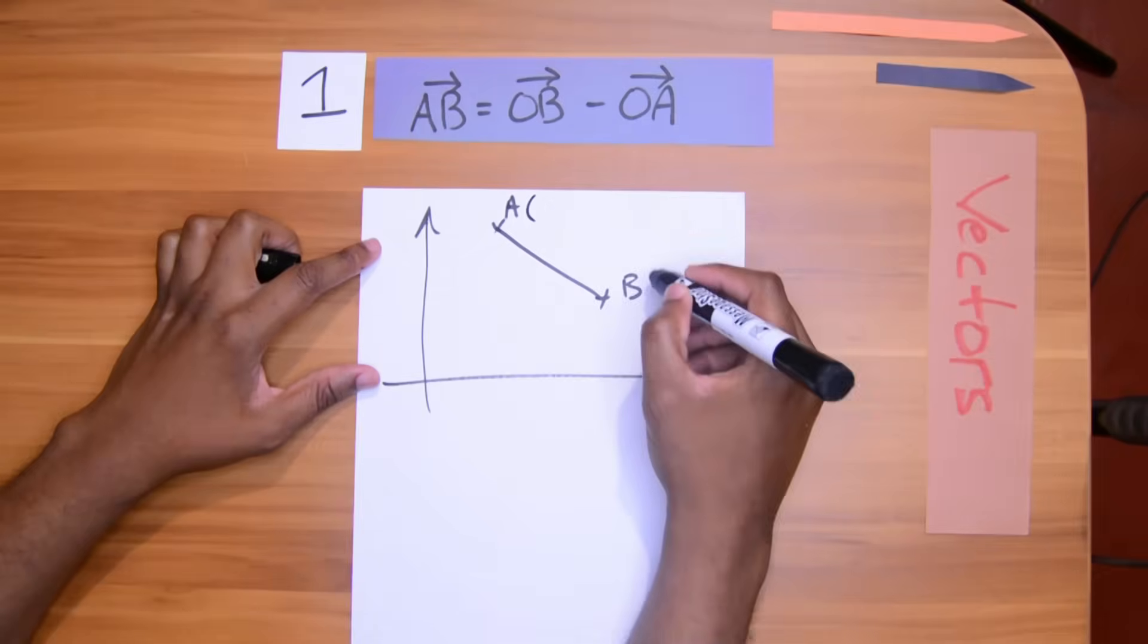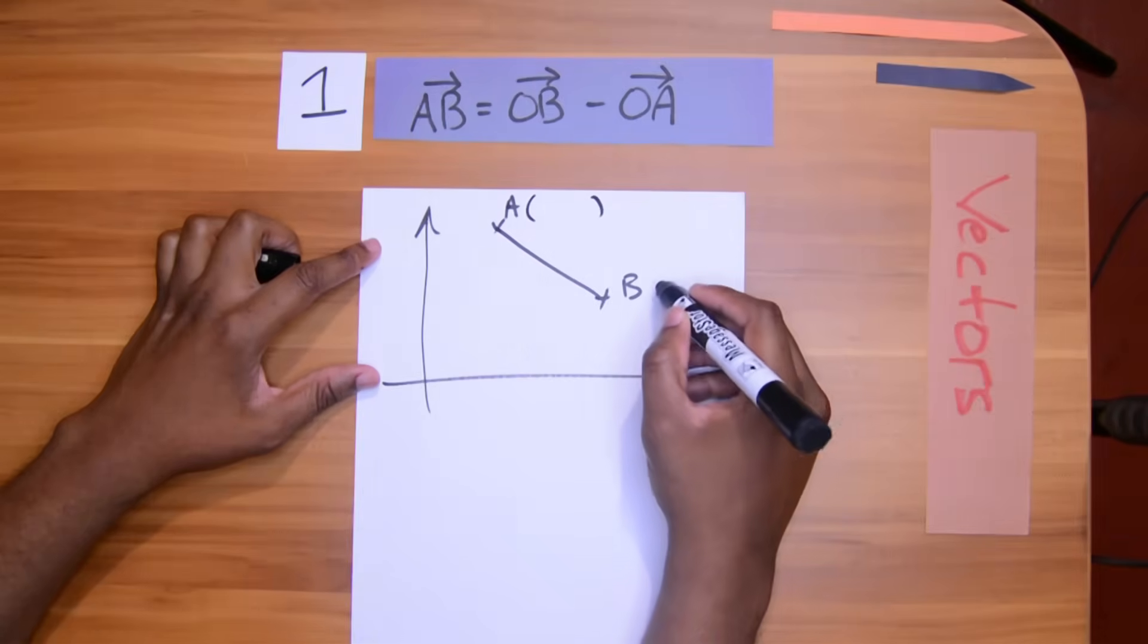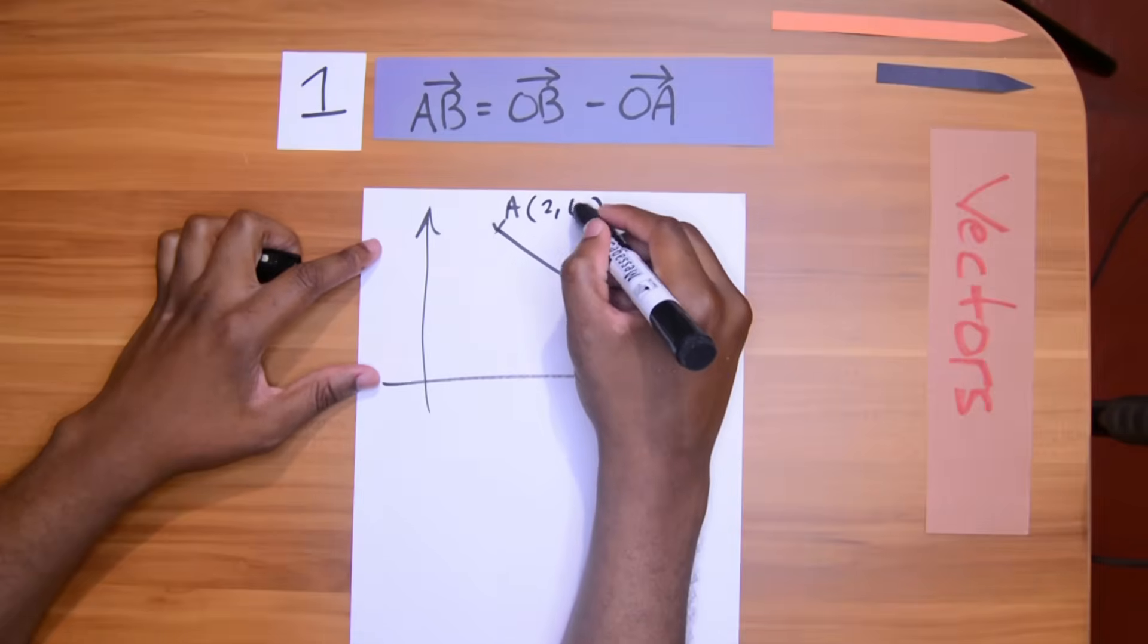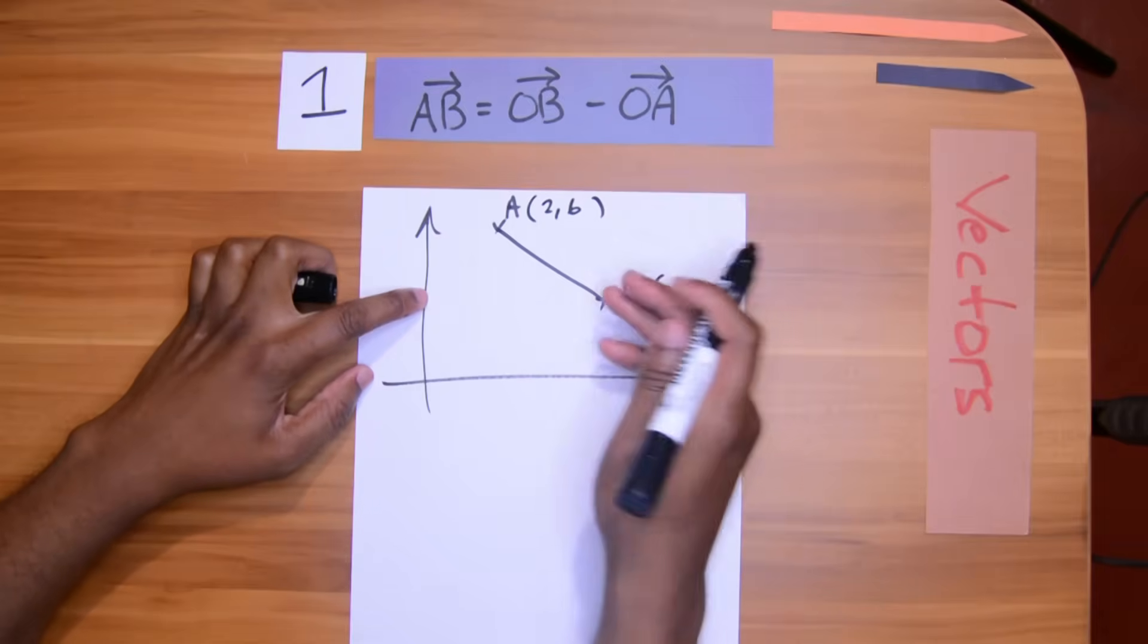So in this case, we would be given the coordinates of A and we would be given the coordinates of B. Let's make up some coordinates. Two, six, seven, three.